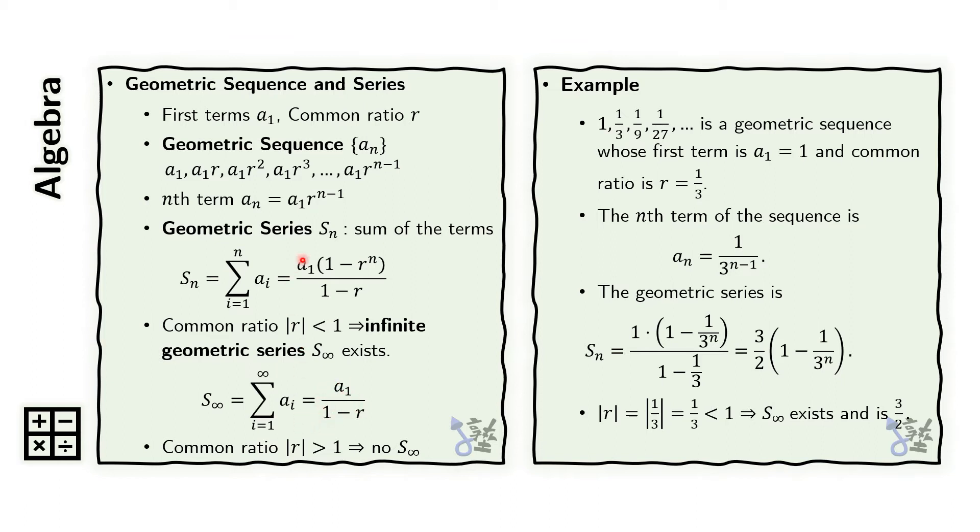However, if the absolute value of the common ratio is greater than 1, then the infinite geometric series does not exist.